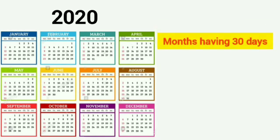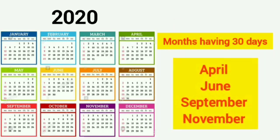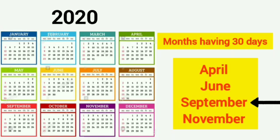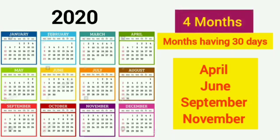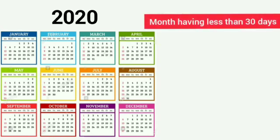Now, see the months which have 30 days: April, June, September and November. These are four months having 30 days.